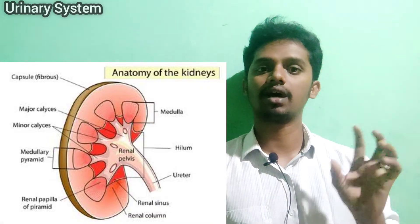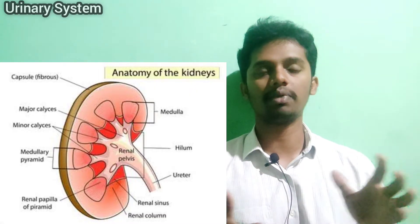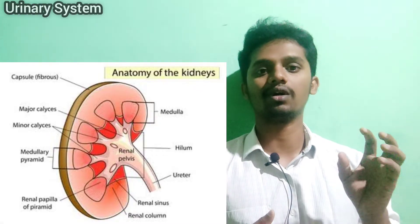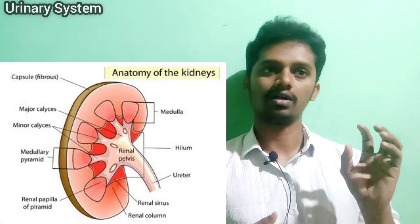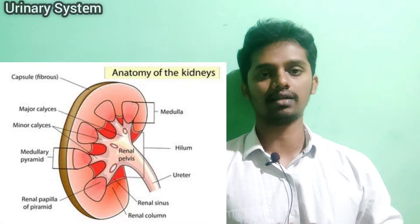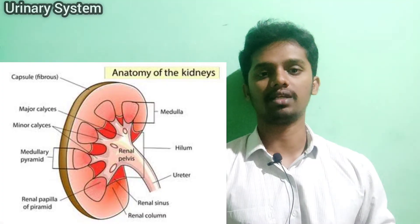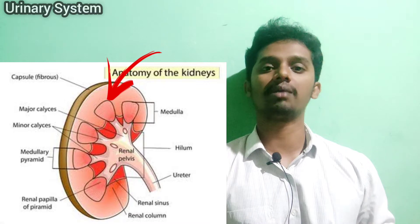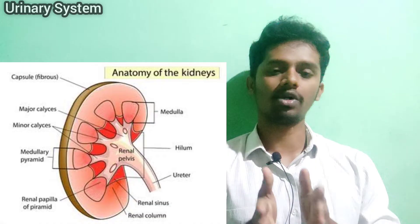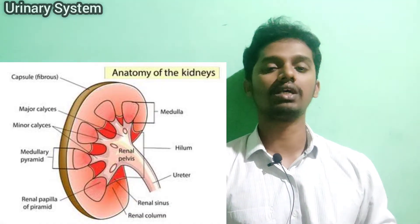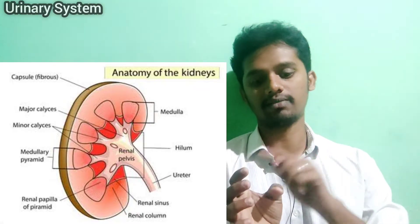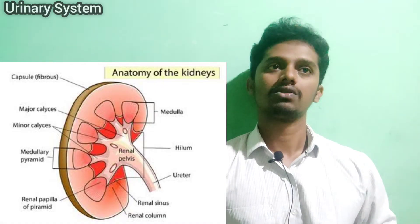To distinguish the two: the renal medulla is dark and reddish-brown in color, while the renal cortex is a very light color. In the renal medulla you can see the renal pyramids — pyramid-shaped structures. In between the pyramids there are gaps called renal columns, which divide the pyramids.